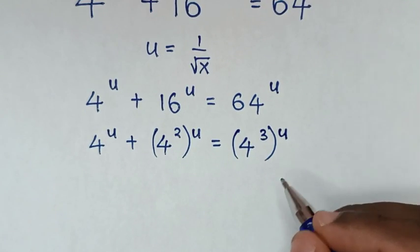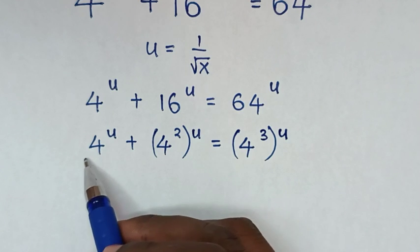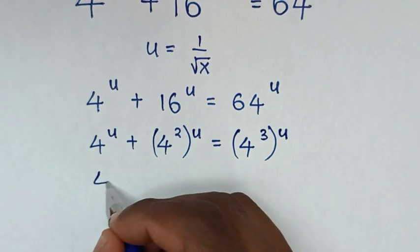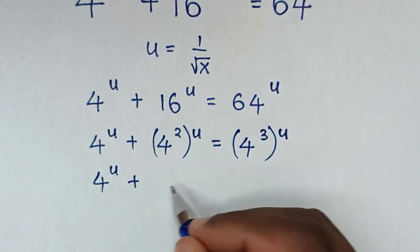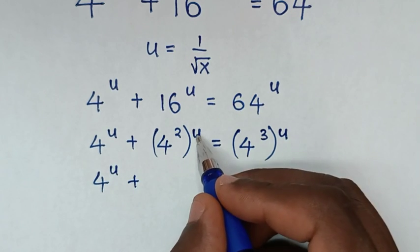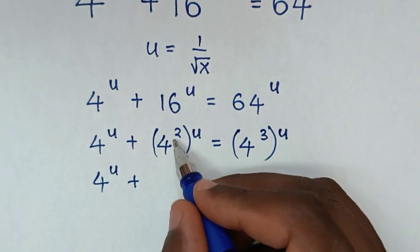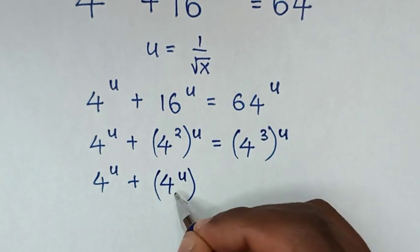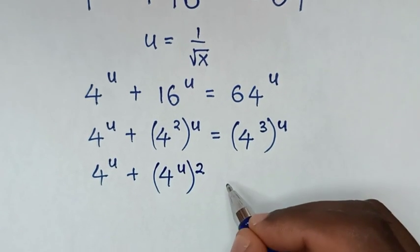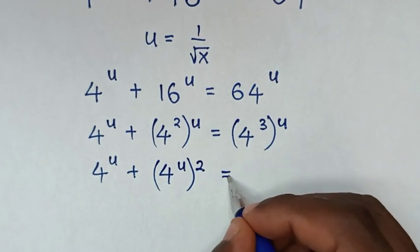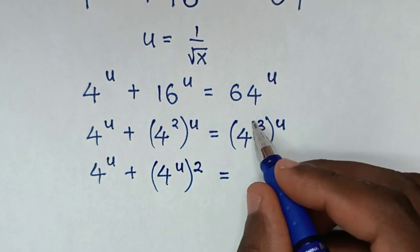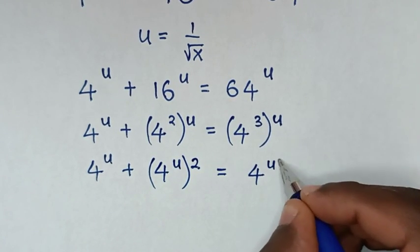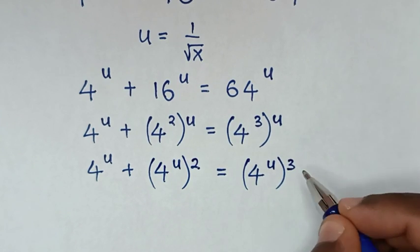In the next step, we make the same exponent of 4 to the power of u. So it will be 4 to the power of u, plus we take the power of u inside the bracket, with the power of 2 outside, equals 4 to the power of u bracket, with the power of 3 outside.